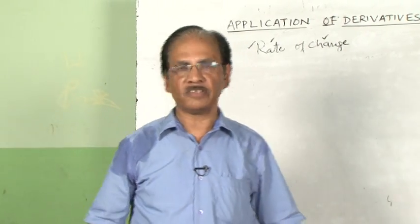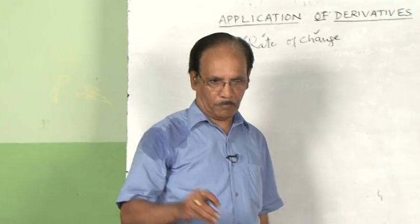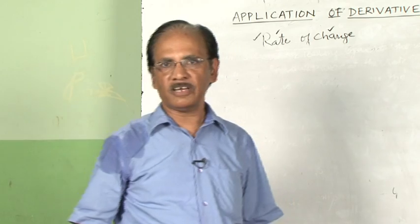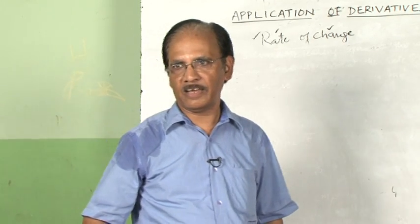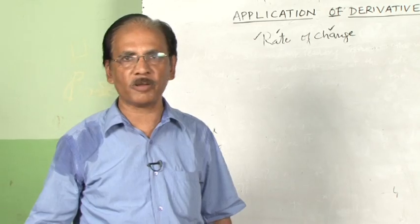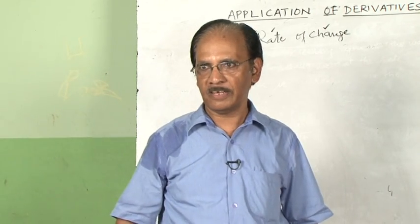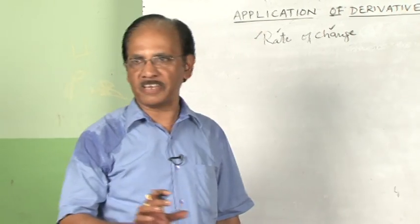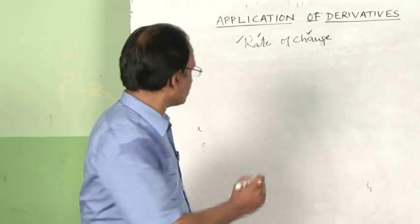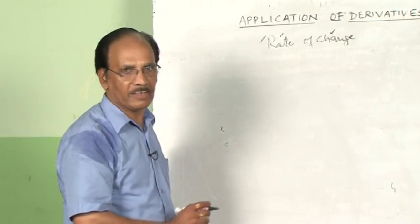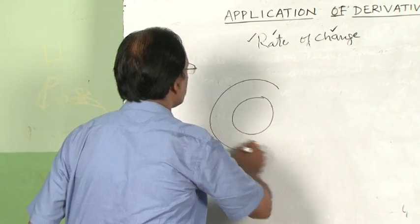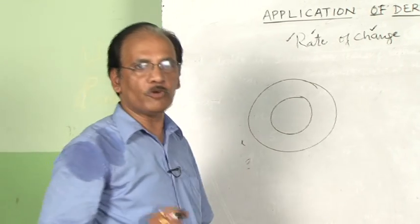Let us deal with one of the problems. In a pond, if a stone is dropped, ripples start emanating until they strike the bank — this is a common observation. A problem states that ripples are moving at a rate of 5 centimeters per second.